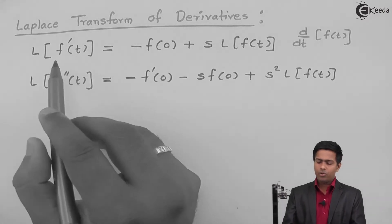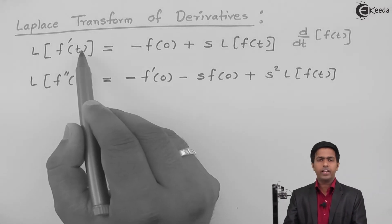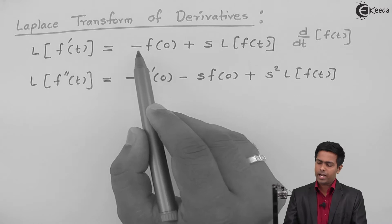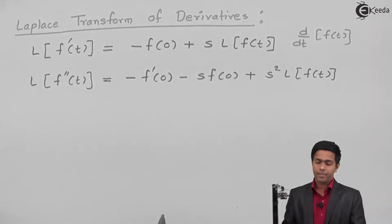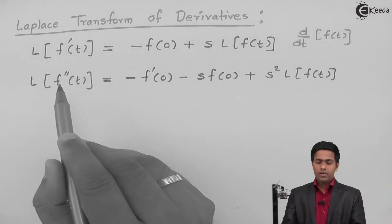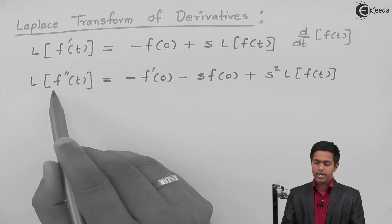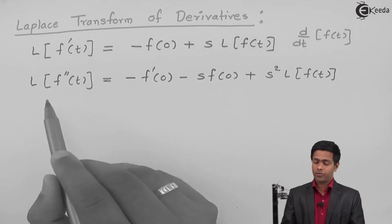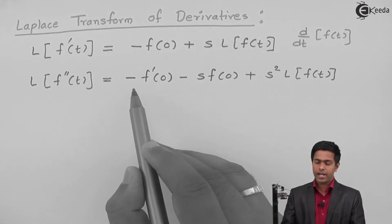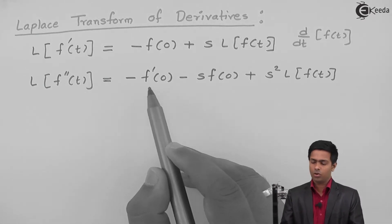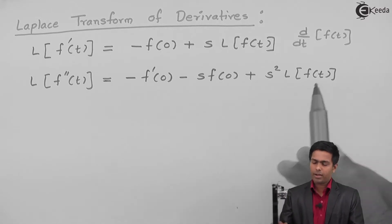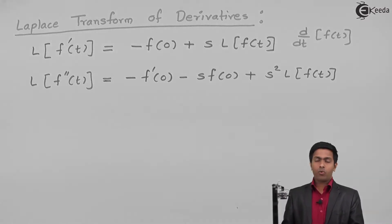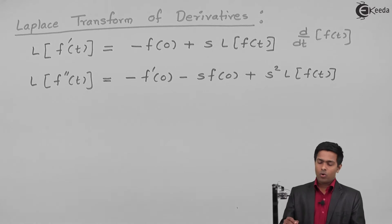The rule states that Laplace of f'(t) is equal to minus f(0) plus s·Laplace of f(t). The Laplace of the second order derivative f''(t) is equal to minus f'(0) minus s·f(0) plus s²·Laplace of f(t). Now the question is how to prove these properties.